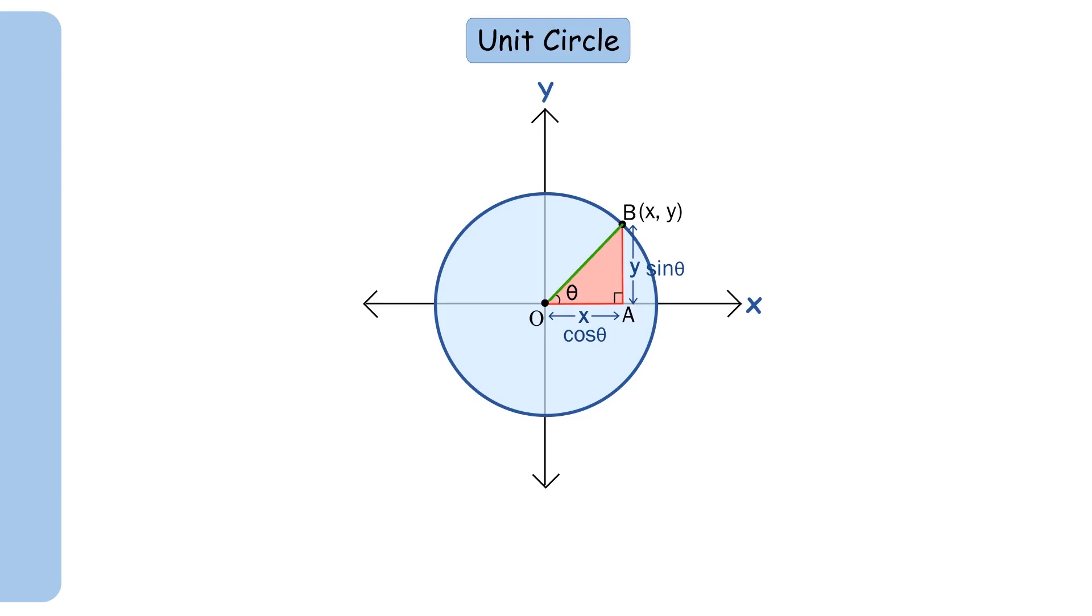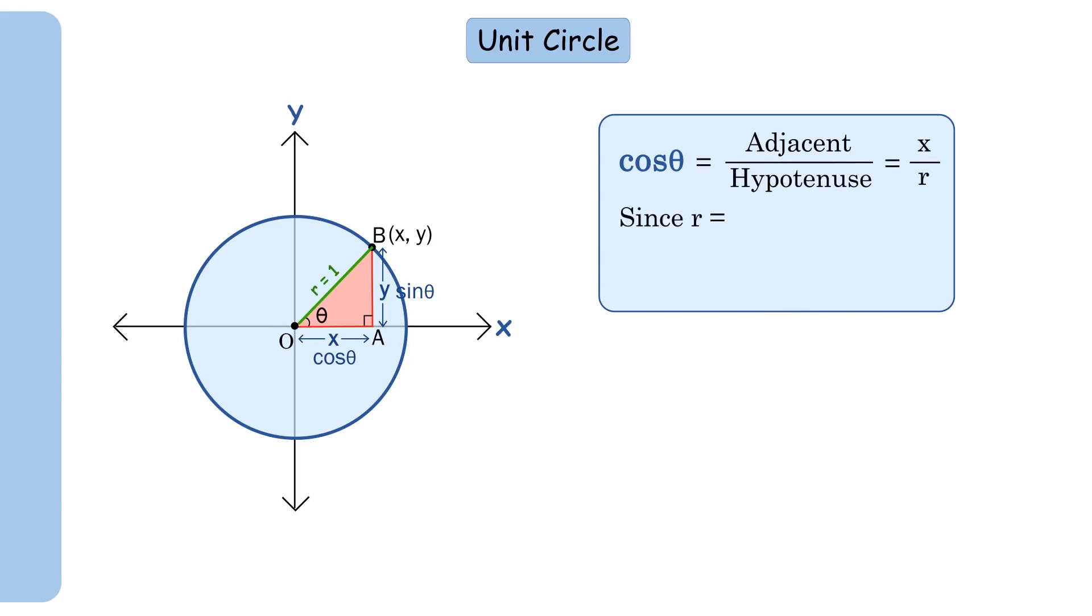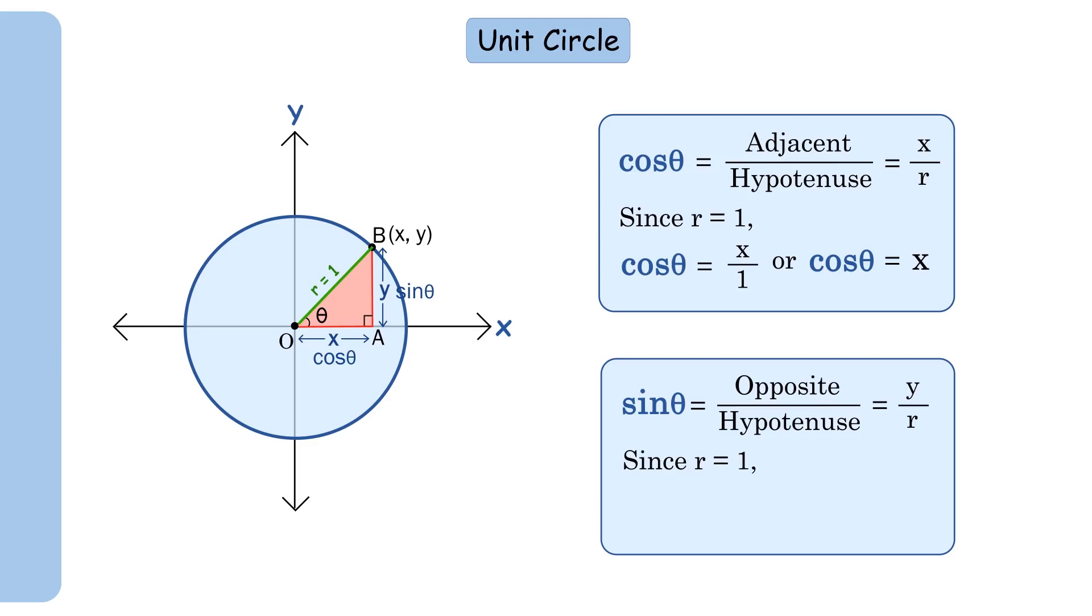In the case of a unit circle, for any set of x and y coordinates, the hypotenuse is equal to 1, that is r equals 1. We already know that the cosine function of angle theta is equal to adjacent upon hypotenuse, or x upon r. Since r equals 1, cos theta equals x divided by 1, or cos theta equals x. Similarly, sin theta equals y.